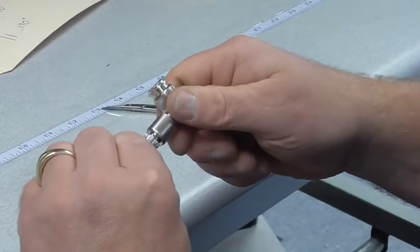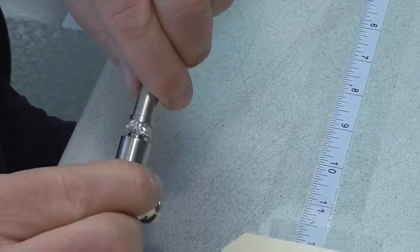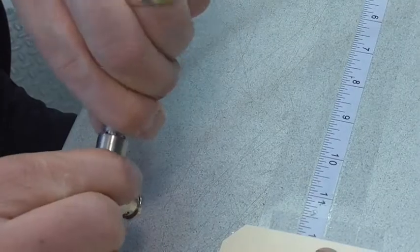The next process is to pull the crimp ferrule up onto the connector body. Secure the body while positioning the ferrule to avoid shifting the captivated center contact.